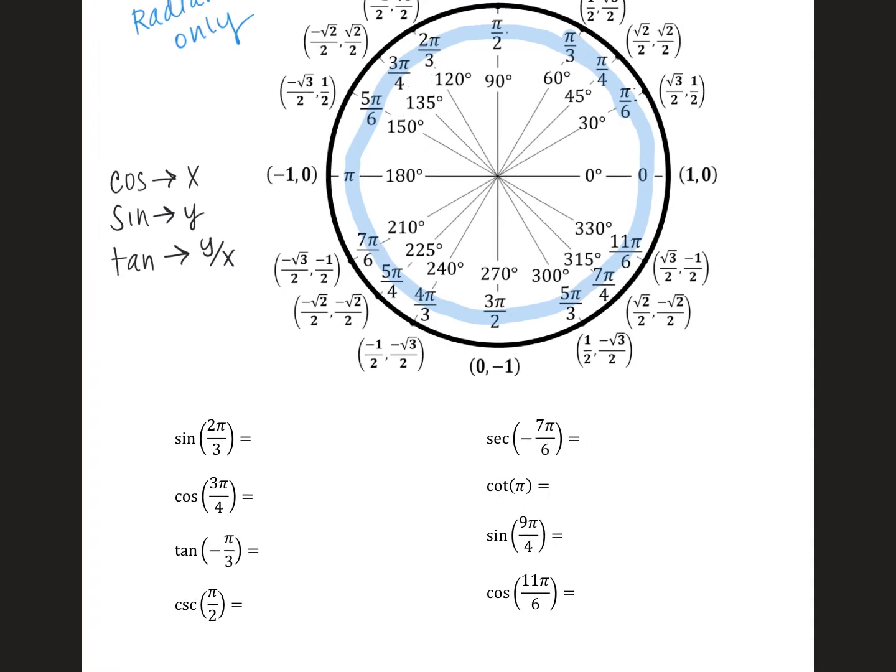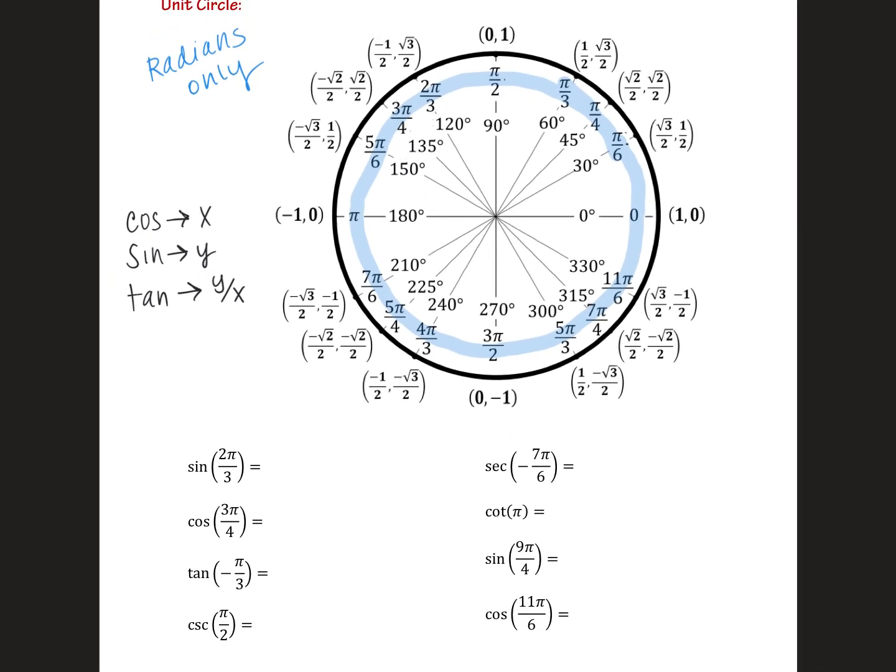So let's practice evaluating some of these. The sine of 2π over 3. As I'm doing this, the first thing I do is I find 2π over 3. If you're more familiar, that's 120 degrees. But as I said, you need to know everything in radians. And sine is the y value, which is the square root of 3 over 2.